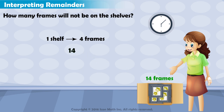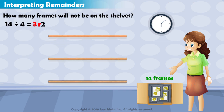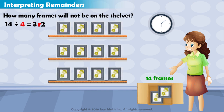14 divided by 4 equals 3, with a remainder of 2. If Diana wants each shelf to have 4 picture frames, she can have 3 shelves with 4 picture frames on each.